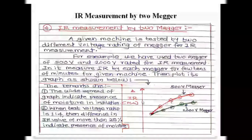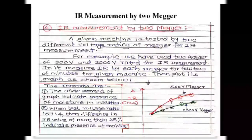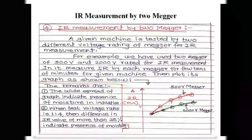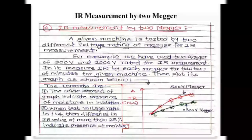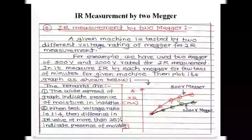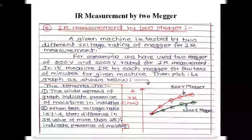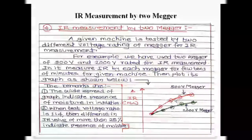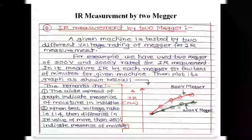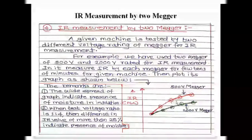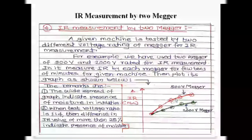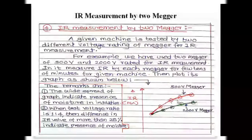The graph is similar to the dielectric absorption curve, with time on the x-axis and insulation resistance in megaohms on the y-axis. The red color shows the 500 V megger reading graph and the green color shows the 2000 V megger reading graph. The first significance of this graph is the spread: if the graphs are closer together, the insulation is in dry condition; if they are more separated, it indicates the insulation has absorbed moisture, solid impurities, dirt, dust, or an oily sticky layer.